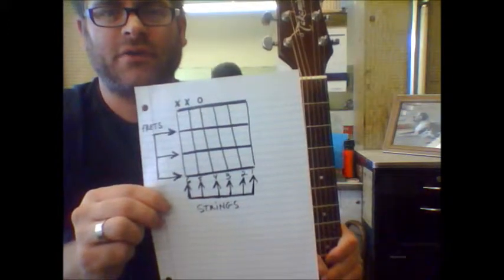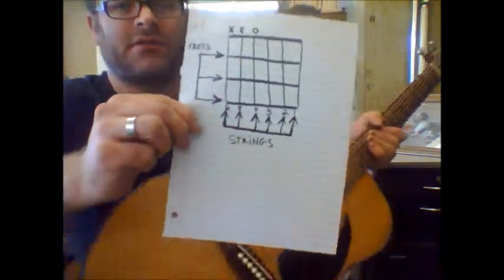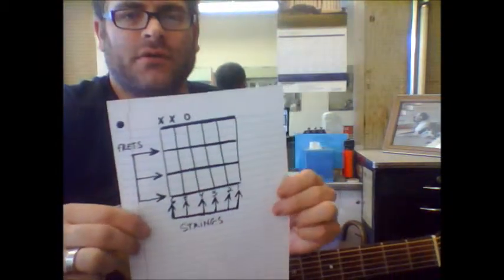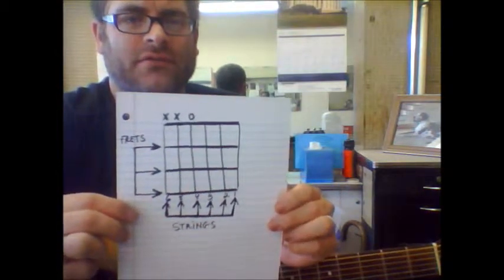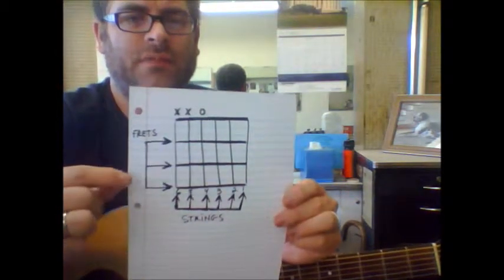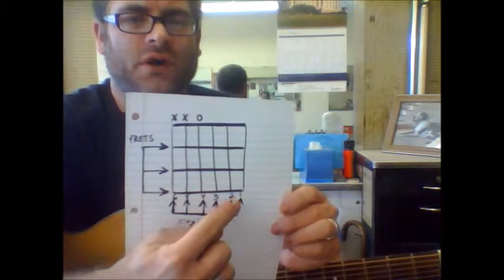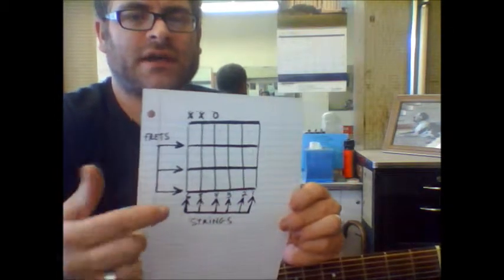When you're looking at it like this, you've got to remember that the frets are horizontal. So the horizontal left to right are the frets, and the up and down represent the strings: 1, 2, 3, 4, 5, and 6.